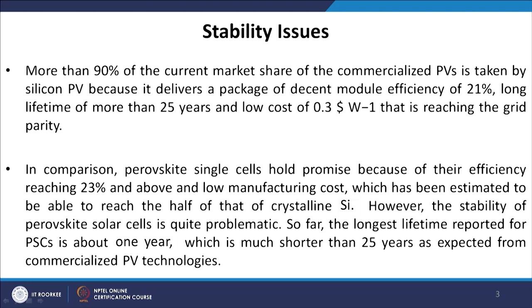In comparison, perovskite single cells hold promise because of their efficiency reaching 23 percent and above, and low manufacturing cost estimated to be able to reach half of crystalline silicon. However, the stability of perovskite solar cells is quite problematic. The longest lifetime reported for a PSC is about one year, which is much shorter than the 25 years expected from commercialized PV technology. Perovskite has efficiency comparable to silicon at 23 percent, much lower cost, but in terms of lifetime, where silicon runs for 25 years, perovskite can run for only 1 year.